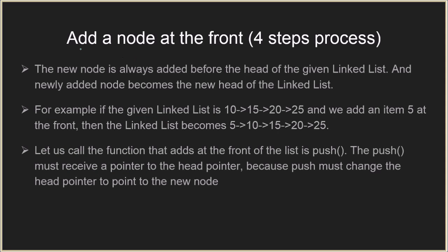The first case is adding a node at the front — this will be a four-step process. The new node is always added before the head of the given linked list, and then the new node will become the new head. For example, if you are given the linked list 10, 15, 20, and 25, and you need to add 5 to the front, the new linked list will be 5, 10, 15, 20, 25, and the pointer pointing to 5 will be the new head.